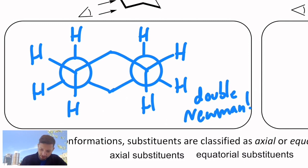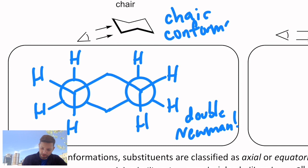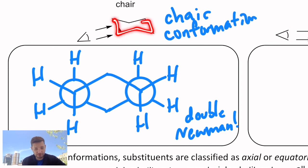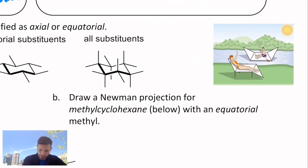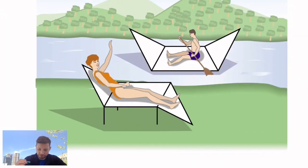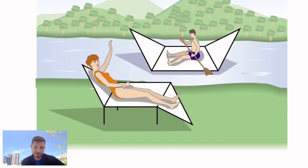This is actually called a chair conformation. That's simply because if you look at the three-dimensional shape of this, it sort of resembles a chaise lounge. There's a cartoon that shows someone lounging on one of those chairs — and that's a cyclohexane ring. That's not the only conformation a cyclohexane ring can exist in; it's just the most stable one.